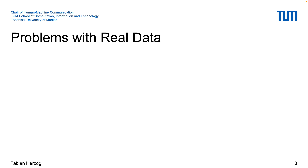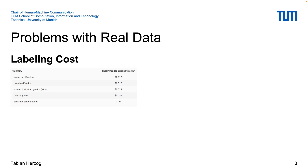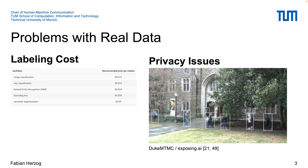The two main problems with real data are labeling costs on the one hand. Once you have obtained all the camera footage, you have to label it, and bounding boxes alone are quite expensive to label. As shown here from Amazon Mechanical Turk pricing, if you want to go to a more interesting task such as semantic segmentation, it gets expensive very fast. On the other hand, there are privacy issues. Here you see an image of the Duke MTMC dataset, which is quite well known in our community, but has been taken offline a few years ago because of privacy issues.